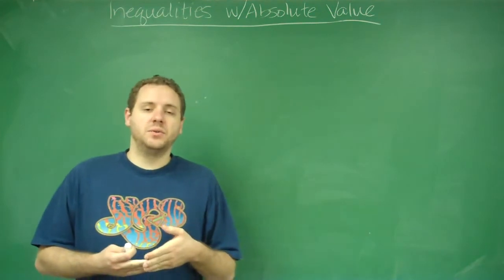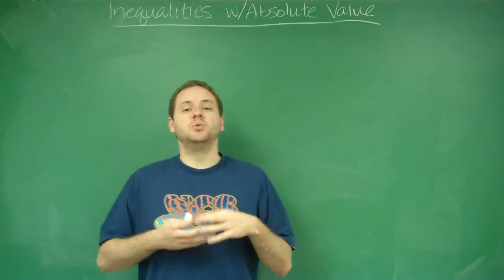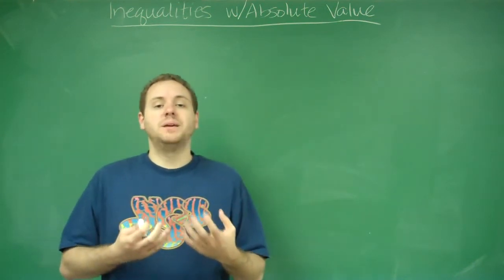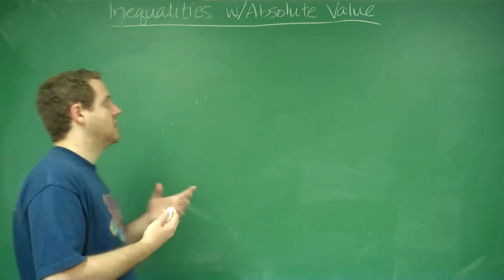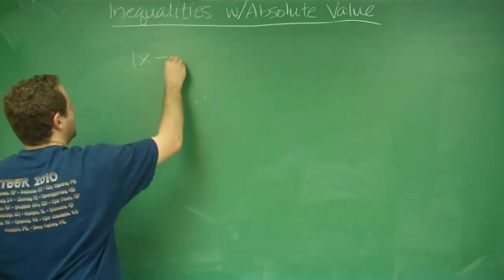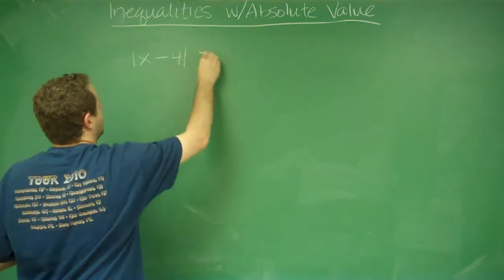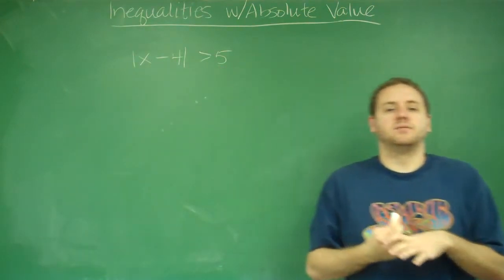When you have an absolute value in an inequality, just like if you had an absolute value in an equation, you really are talking about two separate pieces that combine to form your entire function. So let's, for example, say we had something, the absolute value of x minus 4 is greater than 5.